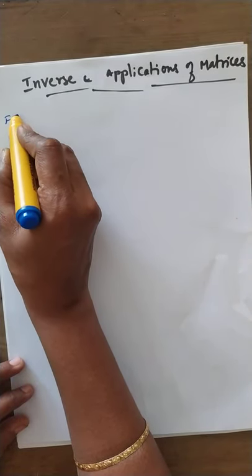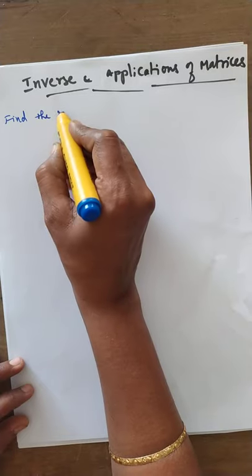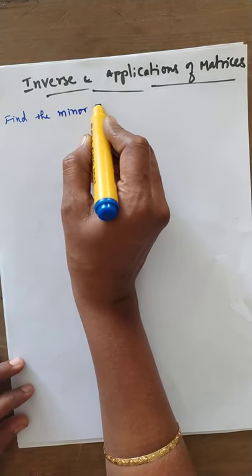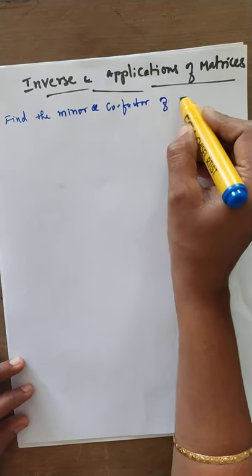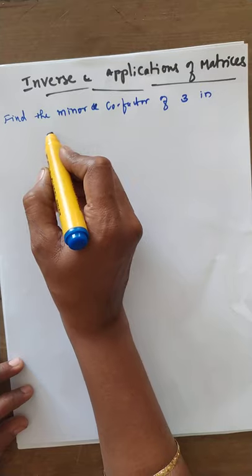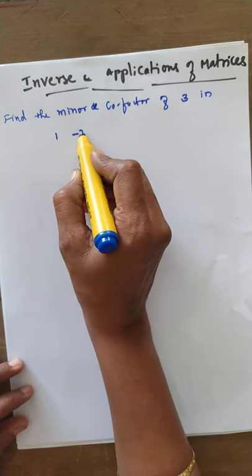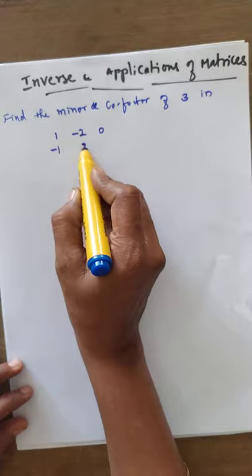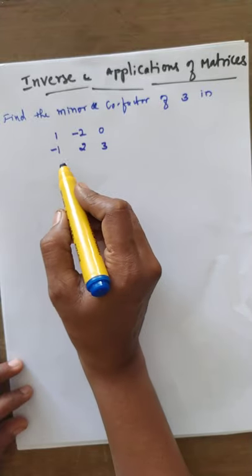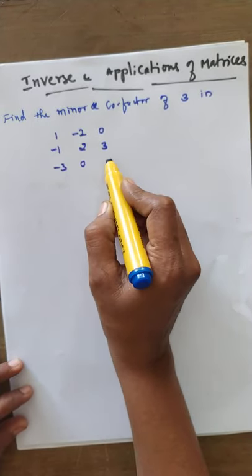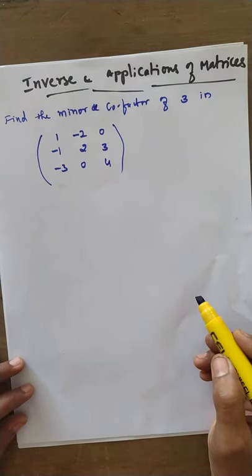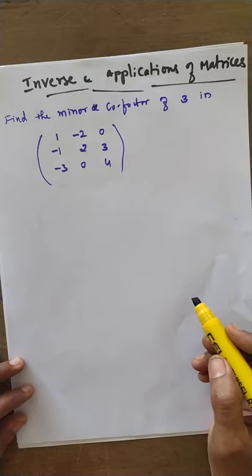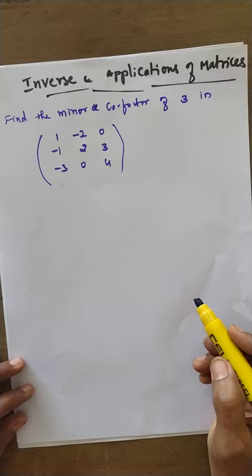First example: find the minor and cofactor of the element 3 in the given matrix: [1, -2, 0; -1, 2, 3; -3, 0, 4]. In this square matrix we have to find out the minor of 3 and also the cofactor of 3.